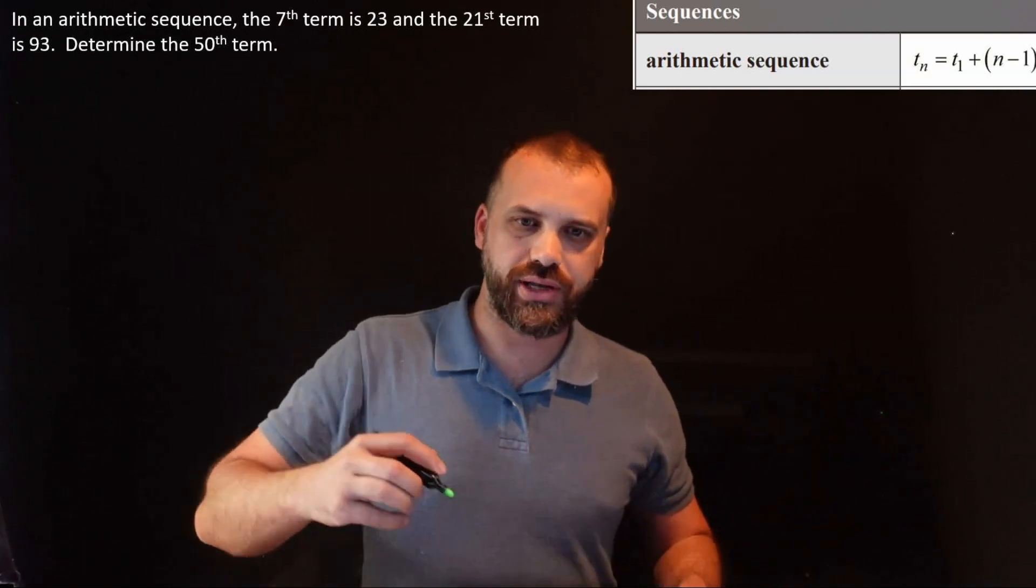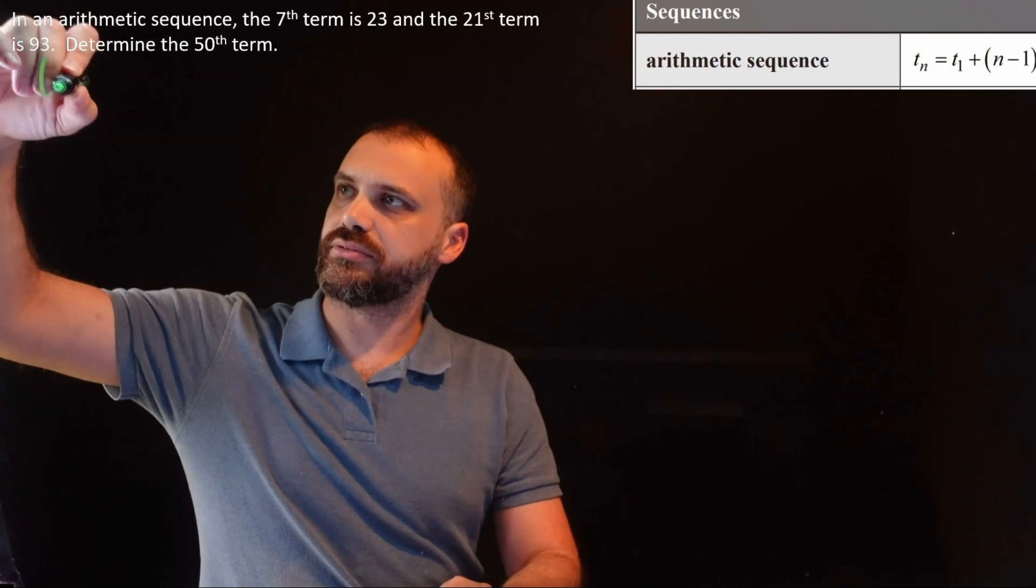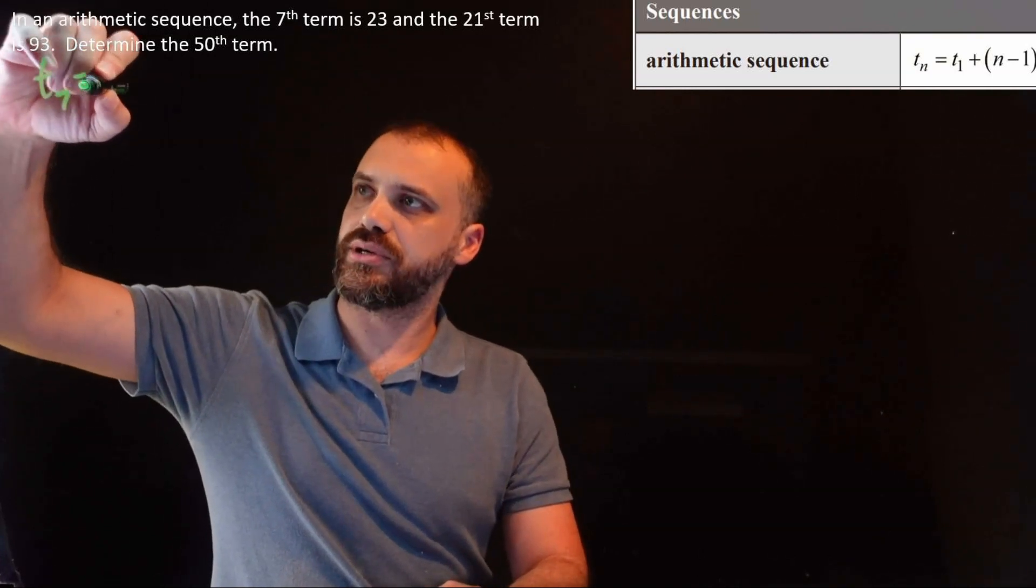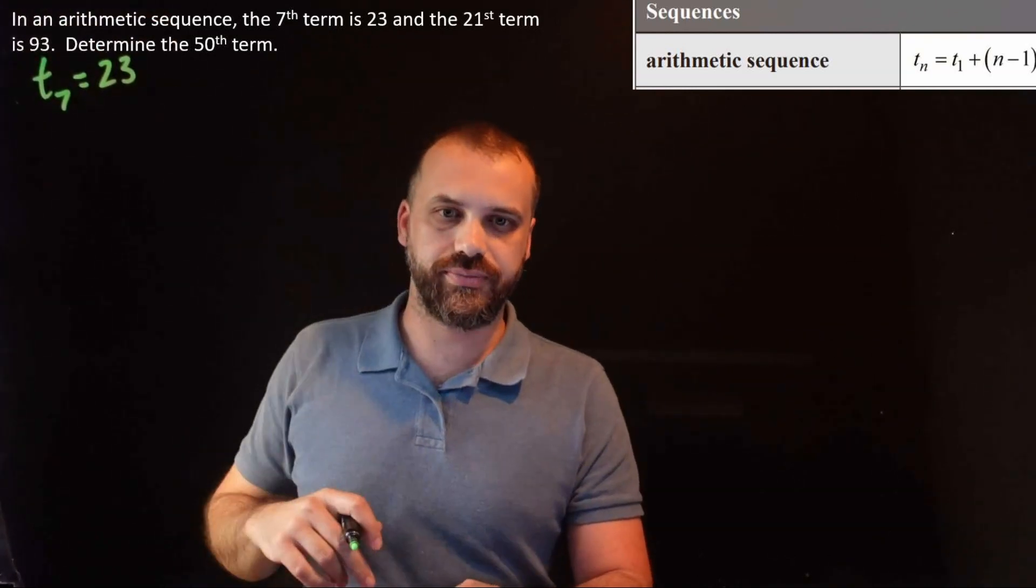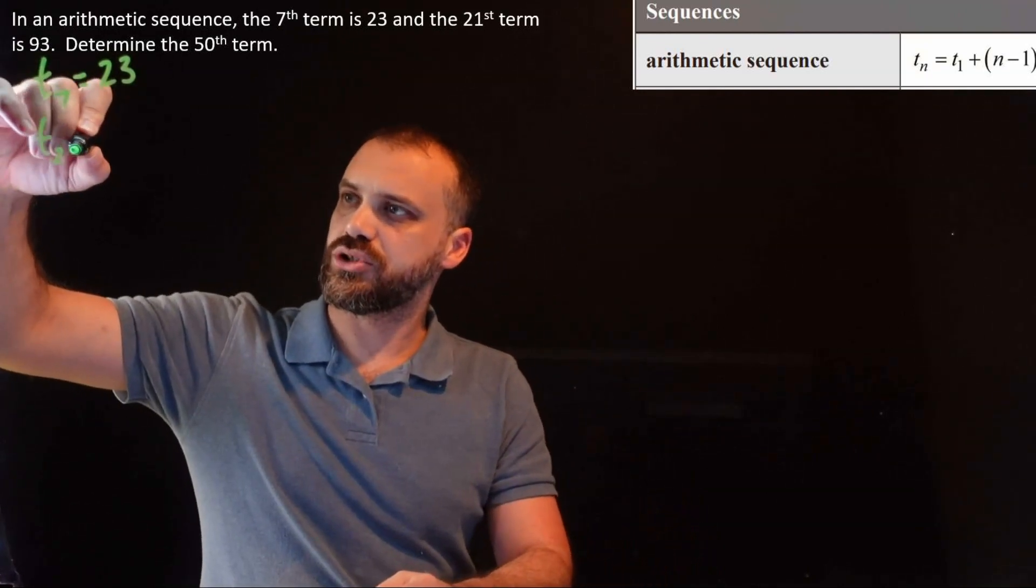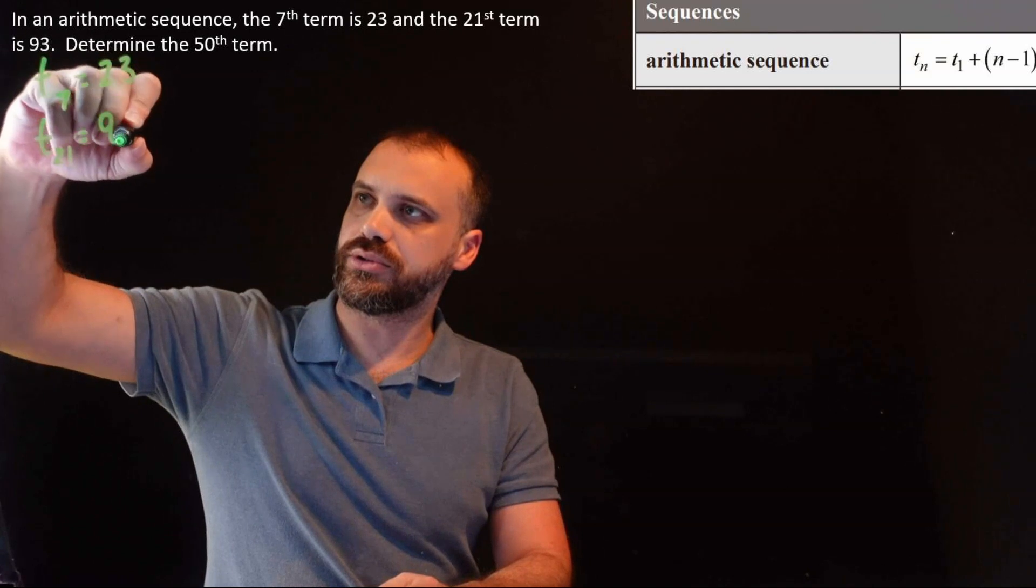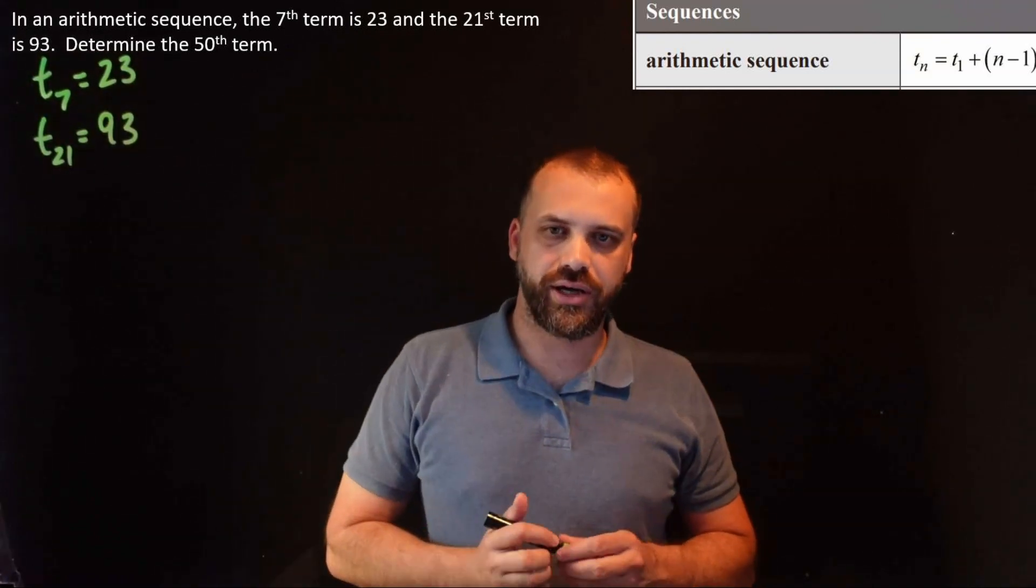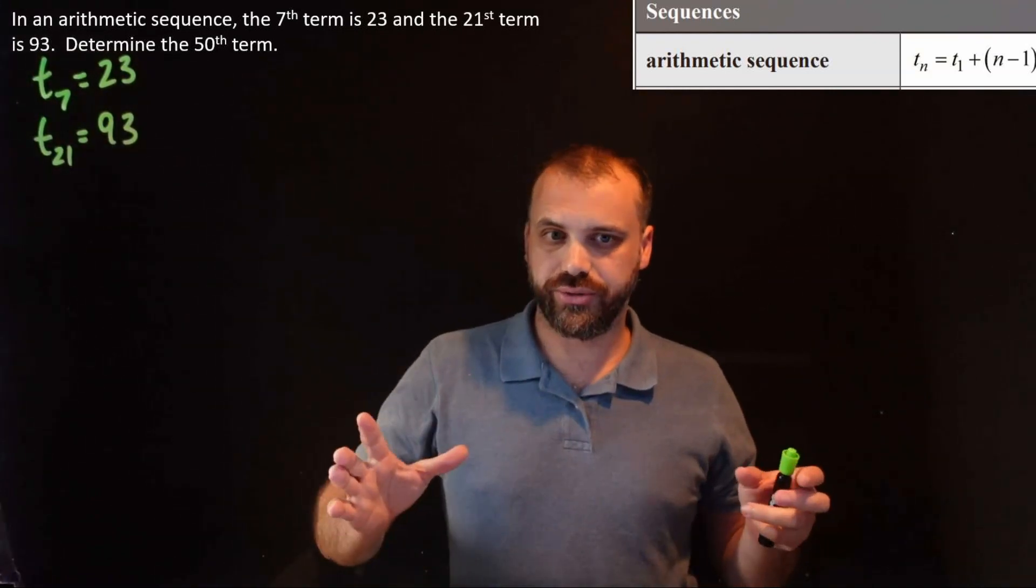The 7th term is 23. Let's just write that down. The 7th term is equal to 23. And it also says the 21st term, term 21, is equal to 93. That's really all we know, right?